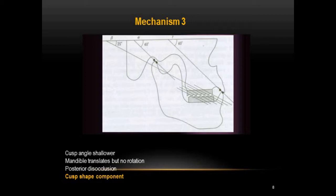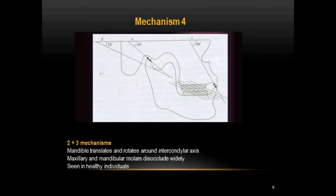The twin tables technique was developed to accommodate both the cusp shape component and the angle of hinge rotation. Mechanism four is seen in healthy individuals: the incisal path is steeper and the cusp angle is shallower. In such situations, the mandible translates, rotates, and creates posterior disclusion of the standard value of 1.06 mm.